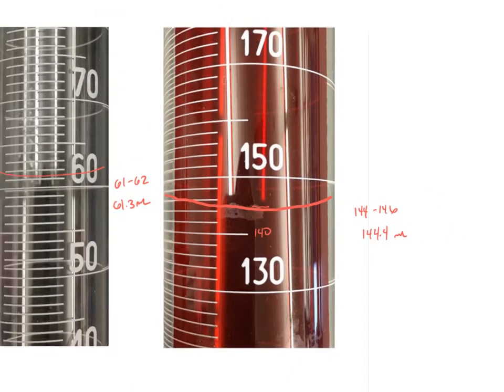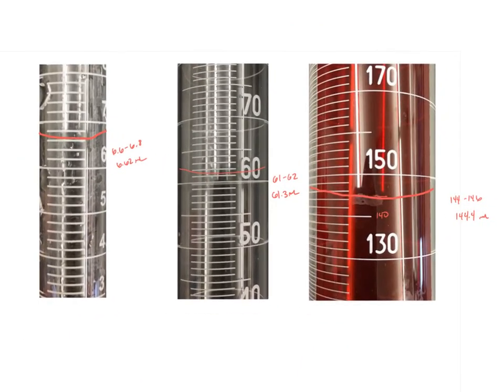Zooming back out, just like the rulers, graduated cylinders come with different scales. You may encounter cylinders with lines that mean different things depending on their size. That first step of identifying what each line represents is extremely important, because it helps you proceed from there.